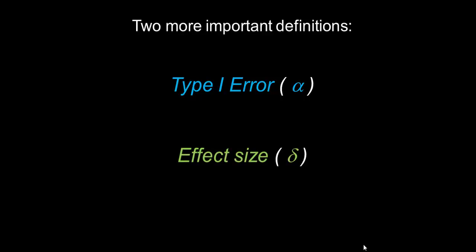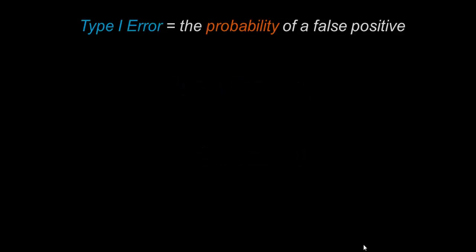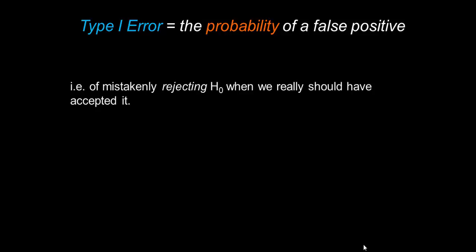And effect size, which we've already mentioned, which is given the symbol delta, and we'll take them one at a time. A Type I error is the probability of a false positive. Remember the Type II error was the probability of a false negative.